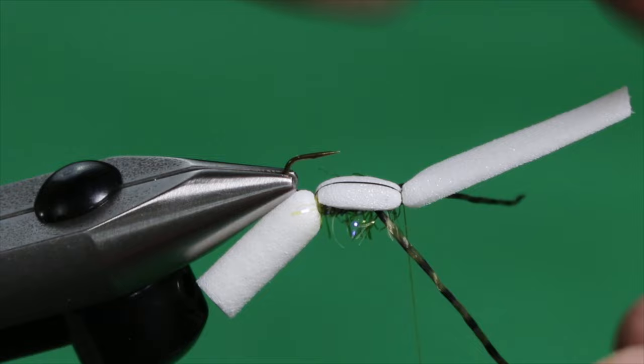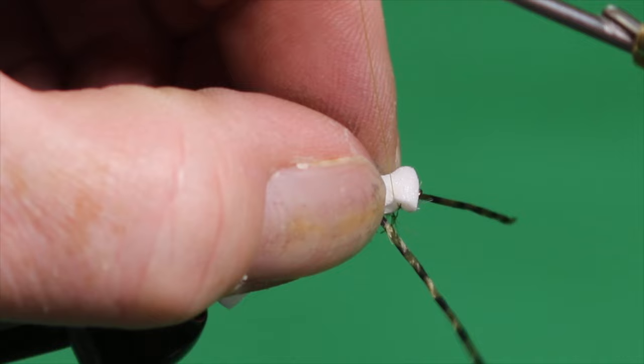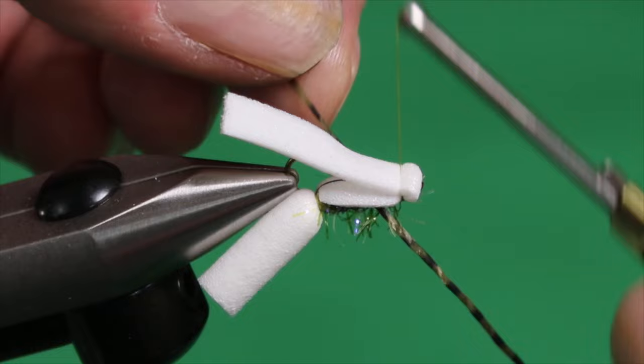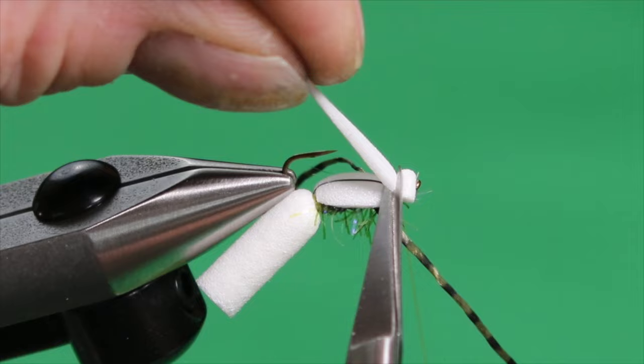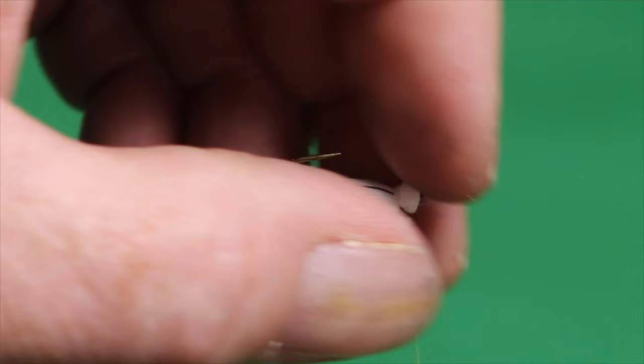And I'm going to take our foam, form a little head. Being careful not to impede the hook eye. If our leg wants to get into the party a little too early. So that forms a little head, very representative of the natural back swimmer. And then I'm just going to pull on this and trim it away.